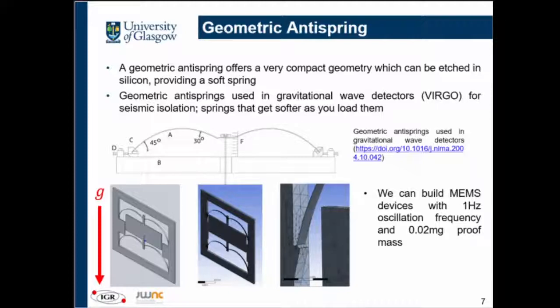Geometric anti-springs — this concept is not new. They are used in the Virgo gravitational wave detector to suspend test masses in the Michelson interferometers. By tuning the mechanical and geometrical parameters of your flexors, you can lower the spring stiffness. Another interesting property of geometric anti-springs is that as you load them, they go softer — the more mass you put, the lower the stiffness you get. Of course there is a limit before the structure collapses completely.